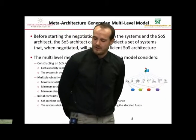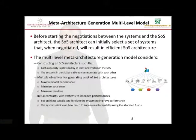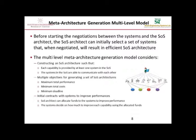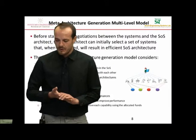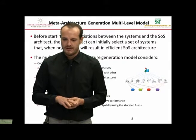Let's look into the details of this model: the meta-architecture generation multi-level model. The purpose is that before starting negotiation between the systems and the SOS architect, the SOS architect can initially select a set of systems that, when negotiated, will result in efficient architectures. The multi-level meta-architecture generation model considers constructing an SOS such that each capability is provided by at least one system, so the overall SOS is capable of providing every capability requested by the mission, and the systems communicate through interfaces. Furthermore, we consider multiple objectives for generating an SOS.